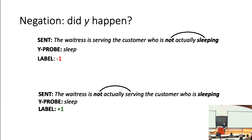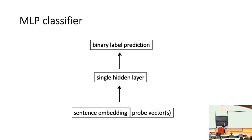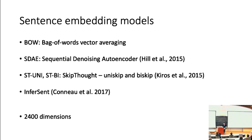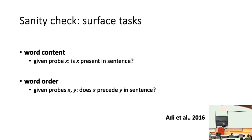Our probing classifier is a simple MLP with a single hidden layer; inputs are the sentence embedding and representations for the probes. The sentence encoders tested include bag-of-words as our sanity check, and a number of sequence models with a variety of encoder-decoder architectures and objectives. What we'll find is that they perform quite similarly to each other despite these different architectures. All embeddings have 2400 dimensions. We also employ a couple of surface tasks drawn from the Adi et al. paper as sanity checks: word content — given probe X, is X present in the sentence — and word order — given probes X and Y, does X precede Y?